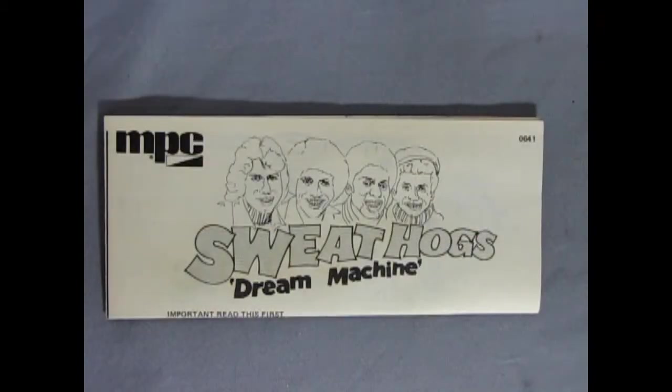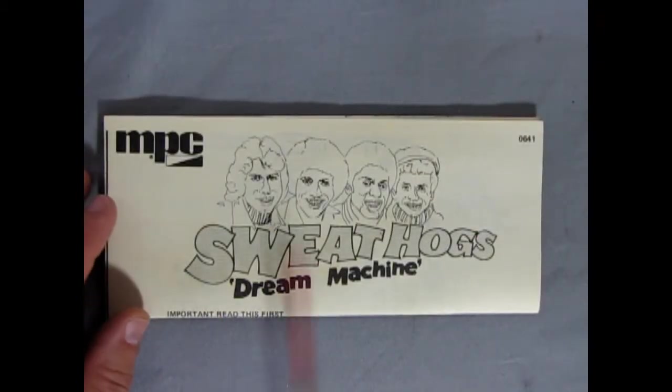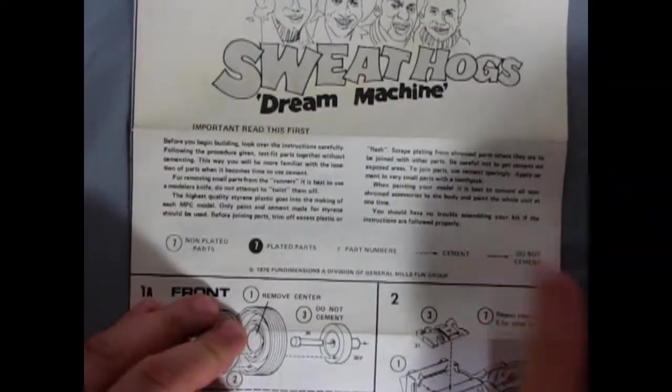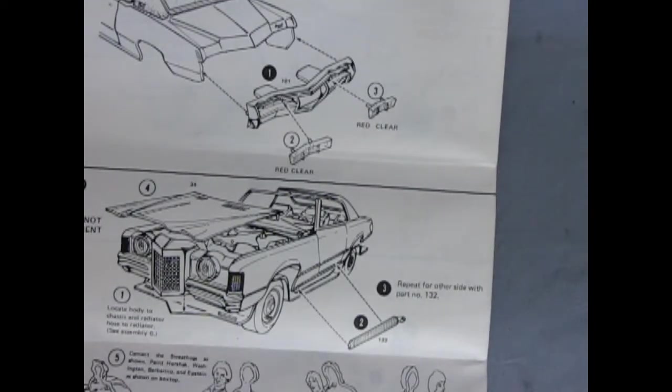So here we have our Sweathogs Dream Machine and all our little stars from Welcome Back Cotter. And then as we open this up we can see again it's the typical brochure type of the two-page fold flip and triple fold.